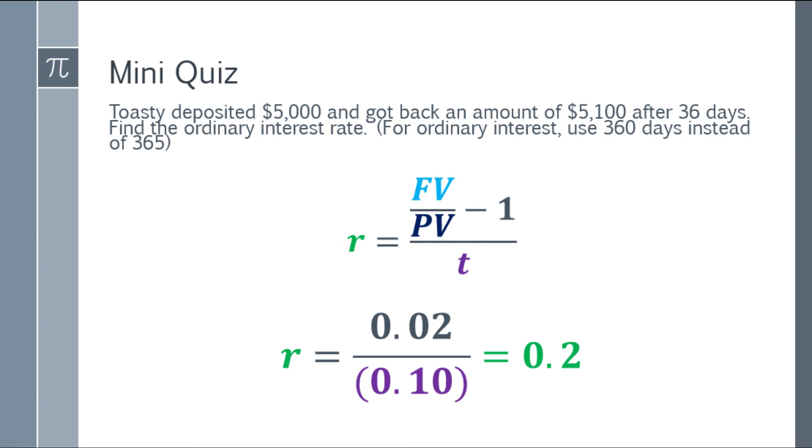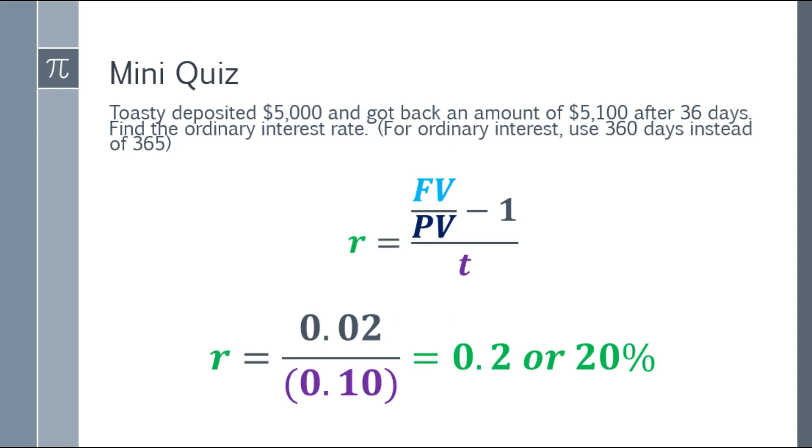Again, for rate, you have to convert it to percent. 0.2 times 100 and add the percent sign, that will be 20%. So Toasty deposited $5,000 and it became 5,100 after 36 days. What is the interest rate, the ordinary interest rate? The answer is 20%.